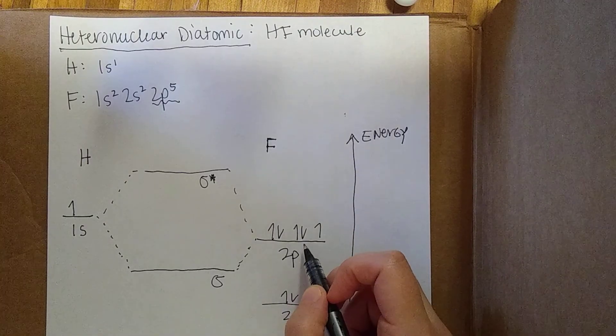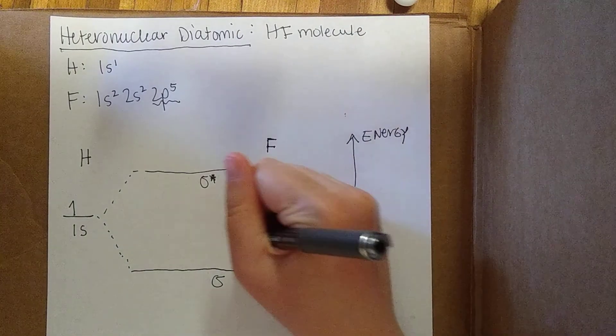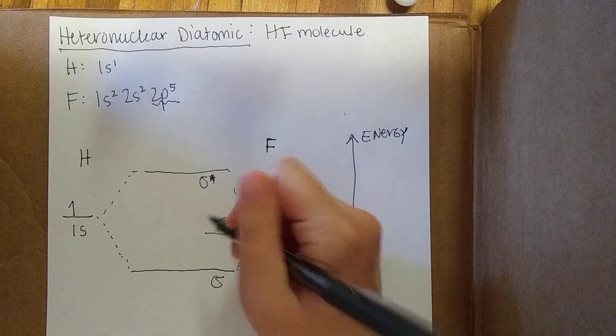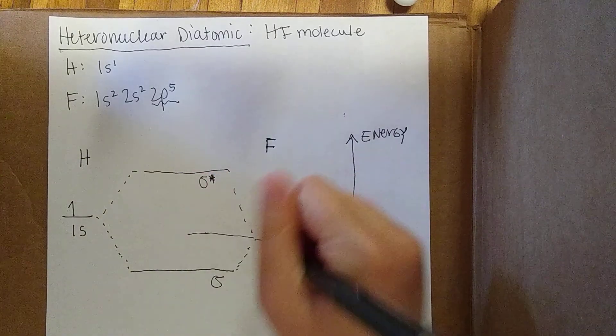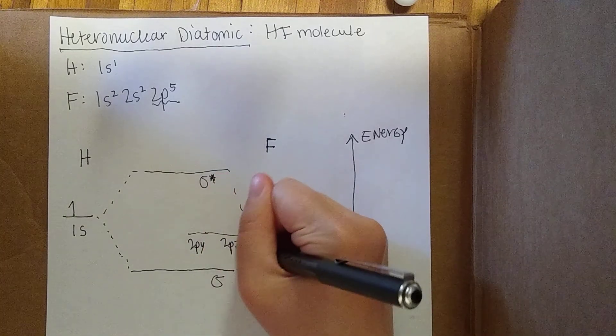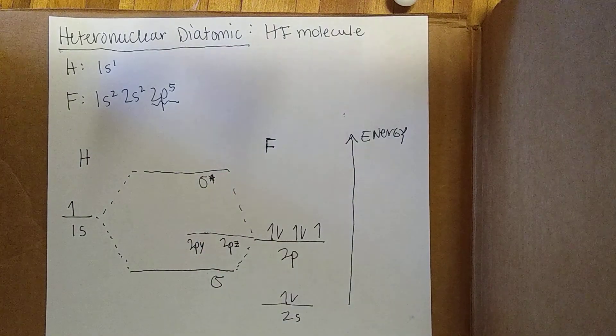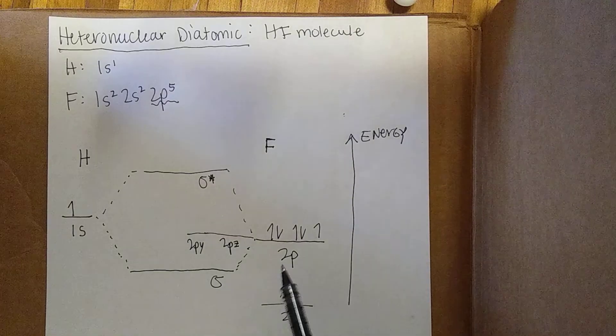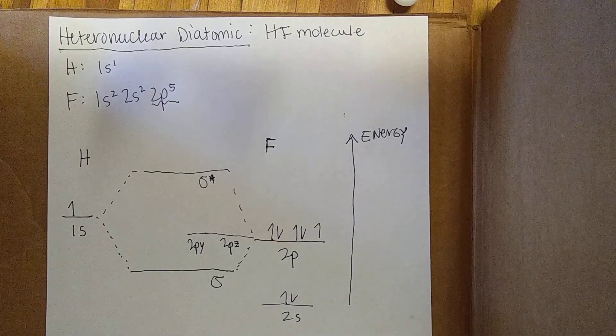The remainder of the 2p orbitals have nothing else to interact with, so they're just going to remain as atomic orbitals. They're the same energy as they were previously. There's 2py and 2pz. Now we have to fill in these molecular orbitals.